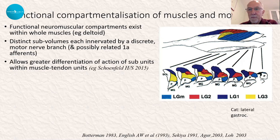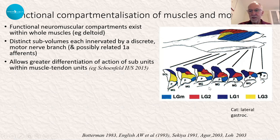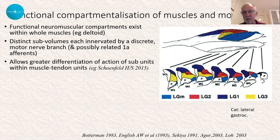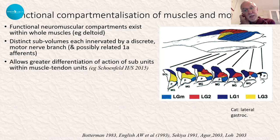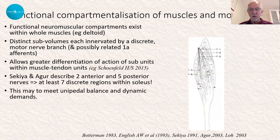All of these sub-compartments have their own discrete portion within the actual tendon that inserts ultimately where it produces its action. So there's differentiation within lateral gastrocnemius and within soleus. In fact, we probably know it best from the reasonably recent article by Schoenfeld, who described that the proximal portion of the hamstrings has more hip extensor function and the distal portion more knee flexor function — first described by Botterman in 1983 in looking at the biceps femoris of a cat.